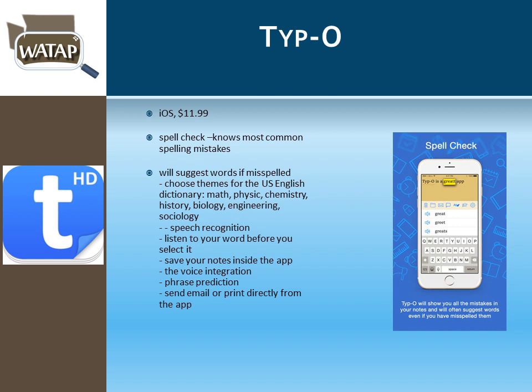Typo is an iOS-only app costing about $12. Similar to Inku, it has a sophisticated spell check that identifies common spelling errors. It has dictionaries specifically for jargon used in math, physics, and chemistry. It also lets the user listen to a word before selecting it into their document and has phrase prediction built in.